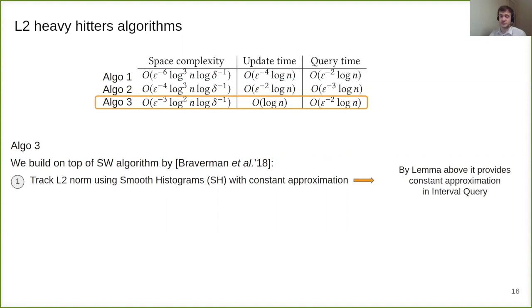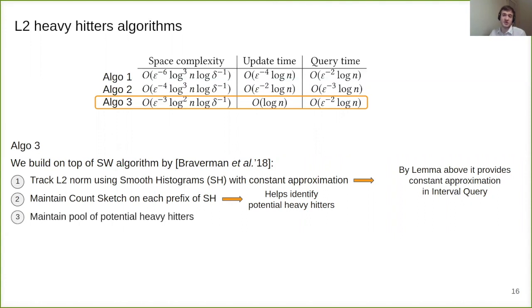It utilizes several tricks. First it tracks L2 norm using smooth histograms with constant approximation. By lemma above, it provides constant approximation also in interval query. It maintains a count sketch on each prefix of smooth histograms. We refer to the same smooth histograms which we are running for L2. And these count sketches can identify potentially heavy hitters on the very early stage. Then we maintain the pool of potential heavy hitters. And for each item in the pool, we run its own smooth histograms for just a counter.